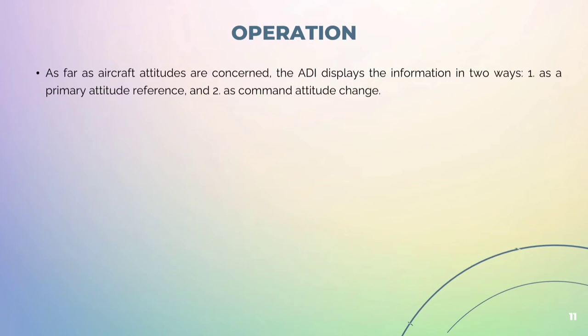As far as the aircraft attitudes are concerned, the ADI displays the information in two ways: one as the primary attitude reference, and two as the command attitude change.